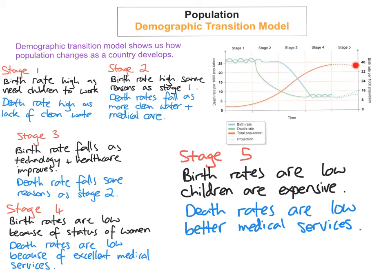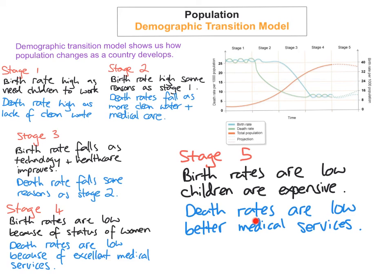In stage 5, you can see that the population is now starting to decrease. Birth rates are very low — one reason is that children are seen as expensive. Family planning is really widely practiced. Women also have a really strong status within society; their role is completely different compared to stage 2 or 3. They are better educated, they secure higher roles in society and jobs, and simply don't have as much time to have as many children. Death rates are low because of better healthcare and medical services such as nursing homes. People are also living longer.